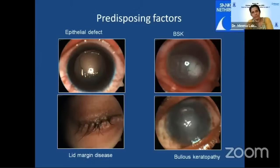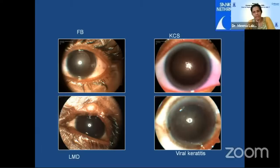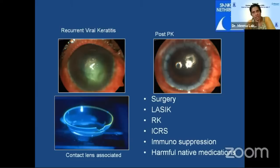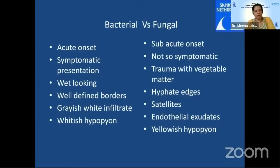The most important predisposing factor is the epithelial defect. Look for underlying band-shaped keratopathy, lid margin disease, compromised cornea such as bullous keratopathy, foreign body removal history, or ocular surface problems like keratoconjunctivitis sicca. Bacterial keratitis is typically acute while fungal is subacute, presenting around two to four weeks. Fungal can have a dry surface with a lot of satellites and endothelial exudates. Bacterial has a lot of stromal edema with well-defined borders, whereas fungal keratitis has feathery edges. The presentation depends on the virulence of the organism, depth of inoculation, status of the underlying cornea, and host immune mechanisms.